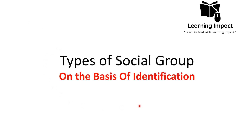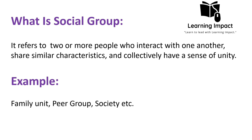Hi everyone, welcome to Learning Impact. In today's lecture we will discuss types of social group on the basis of identification. First, we have to look into the definition of what is a social group. A social group refers to two or more people who interact with one another, share similar characteristics, and collectively have a sense of unity.